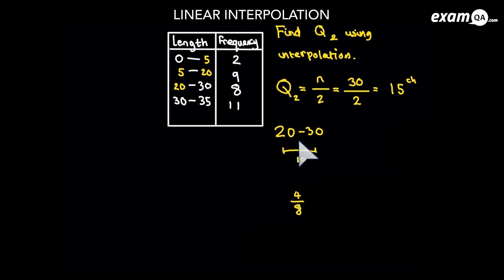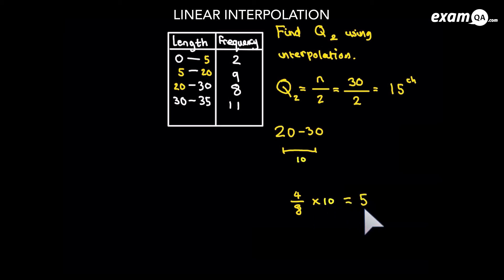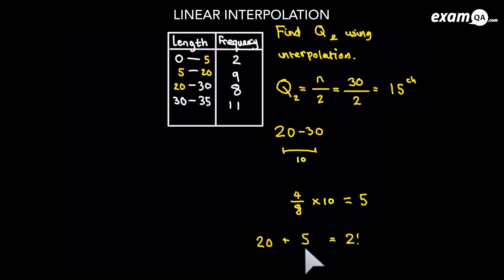Because we want 4 out of 8, that's exactly half of that frequency, so you know it's halfway. Halfway from 20 to 30 is simply 25. But let's do the calculations so you get used to the method. The interval is 10 wide, and we want 4 over 8 of the way in: 4 over 8 times 10 gives us 5. So 20 plus 5 gives us the median of 25.